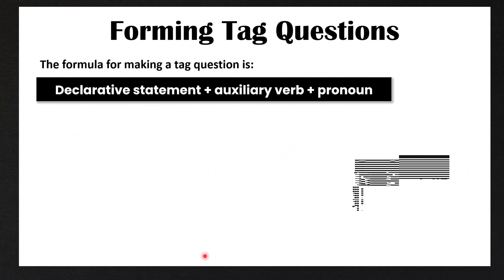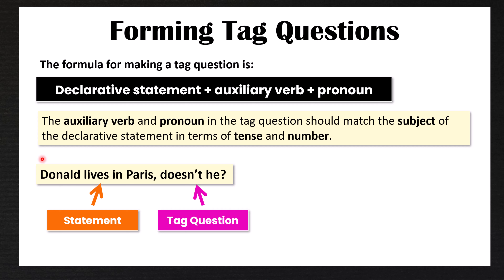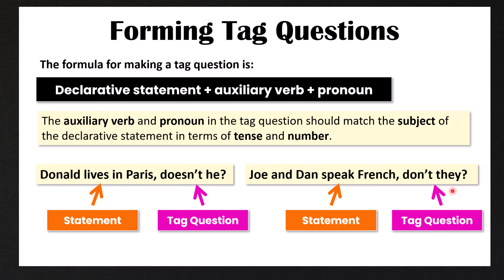So how do we form tag questions? The formula is: declarative statement + auxiliary verb + pronoun. The auxiliary verb and pronoun in the tag question should match the subject of the declarative statement in terms of tense and number. For example, 'Donald lives in Paris, doesn't he?' — Donald is the subject, so we say 'doesn't he', not 'doesn't she'. And 'Joe and Dan speak French, don't they?' — we use 'they' and 'don't' because there is more than one person.